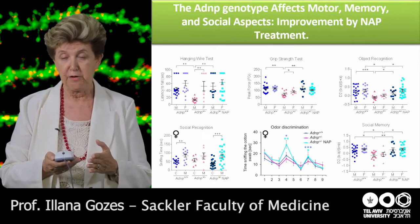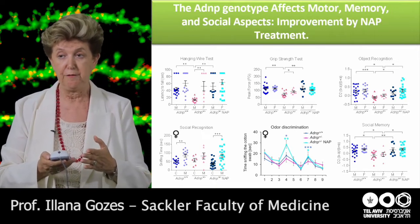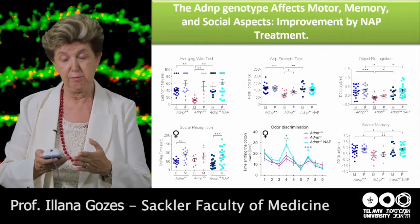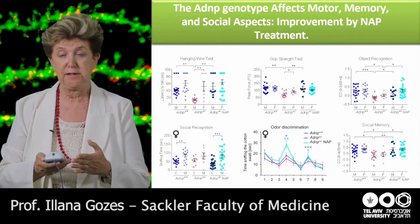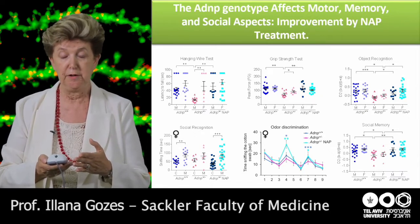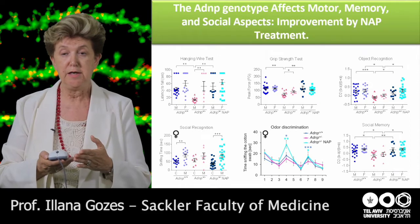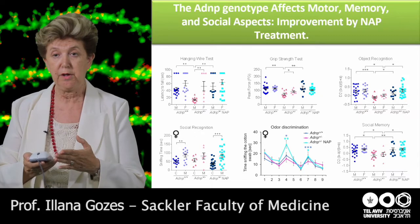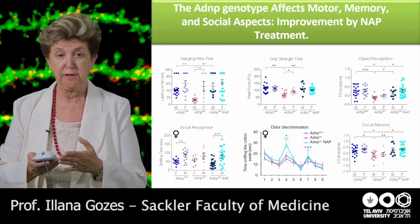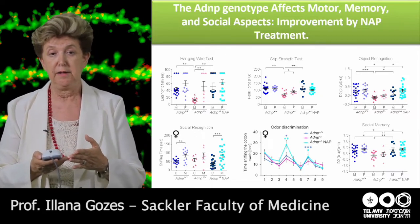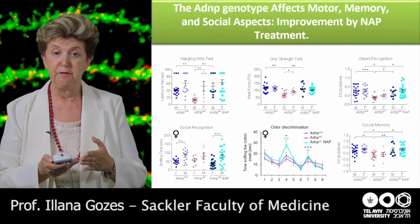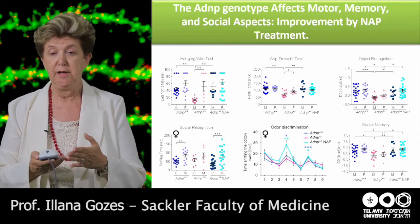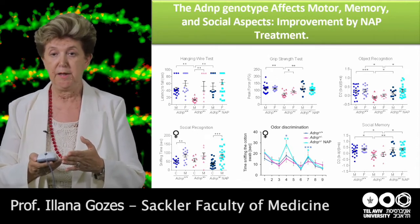We also looked at memory function. All ADNP children are cognitively affected and have intellectual disability. In the mice, we tested object recognition — the ability to differentiate two different objects — and found that both males and females are affected, and in both sexes this is corrected by NAP treatment. We also looked at social recognition, which was more affected in the female and corrected by NAP. Other discrimination tasks were also affected in the female and corrected by NAP.